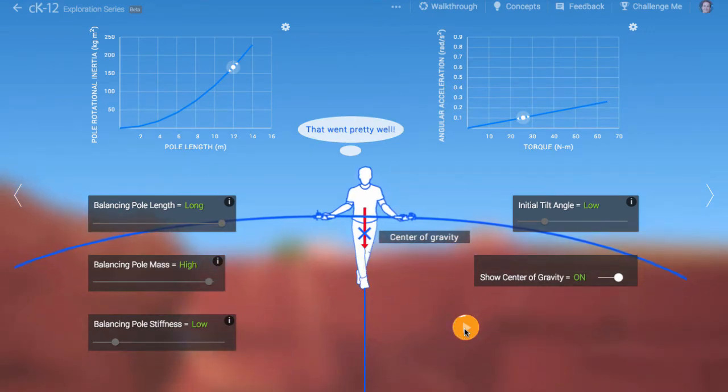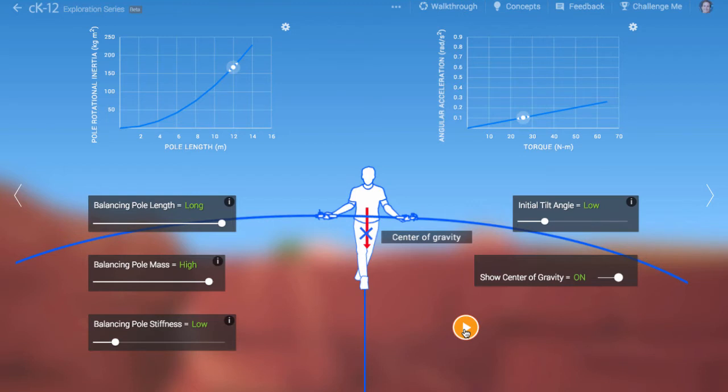The best situation for the tightrope walker is to have a very long and flexible heavy pole. This lowers the center of gravity by a lot. It also gives the walker lots of inertia. This means the acceleration is very low. If he tilts over a little bit, he'll probably have time to react.